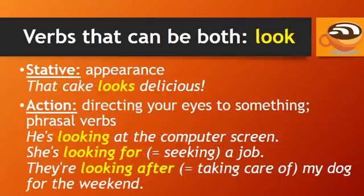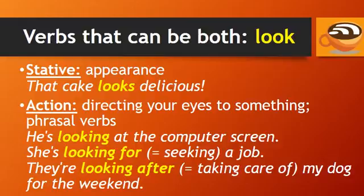'Look' is another verb that can be both stative and an action. 'Look' is a stative verb when referring to something's appearance. For example, 'That cake looks delicious.' 'Look' is an action verb when talking about directing your eyes to something, or in phrasal verbs. For example, 'He's looking at the computer screen,' meaning he is directing his eyes to the computer screen. 'She's looking for a job,' meaning she's seeking a job. 'They're looking after my dog for the weekend,' — looking after means taking care of.